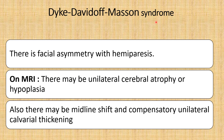In Dyke-Davidoff-Masson syndrome, the patient will have facial asymmetry with hemiparesis. On MRI, there may be unilateral cerebral atrophy or hypoplasia, which is similar to Rasmussen's encephalitis. However, these patients also have midline shift and compensatory unilateral calvarial thickening, which is not seen in Rasmussen's encephalitis.